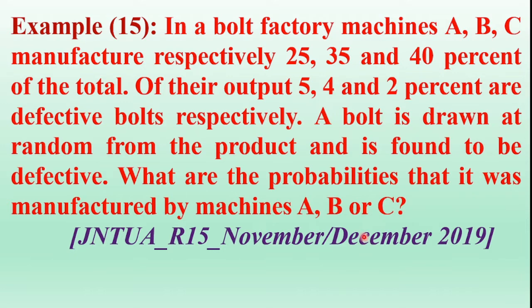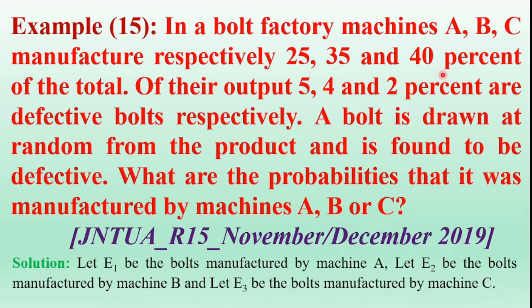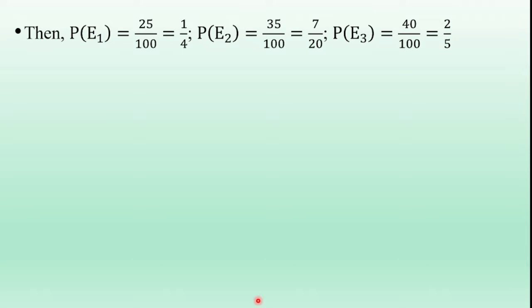From the given data, the machine names are A, B, and C with probabilities 25%, 35%, and 40%. Consider the events: machine A is E1, machine B is E2, and machine C is E3. Therefore, P(E1) = 25/100 = 1/4, P(E2) = 35/100 = 7/20, and P(E3) = 40/100 = 2/5.